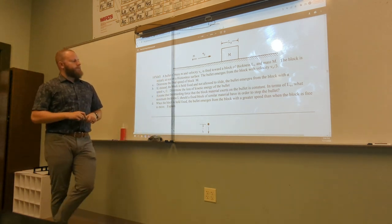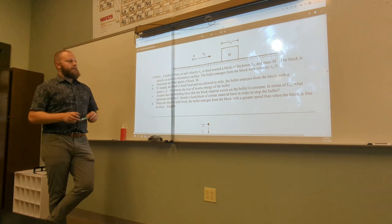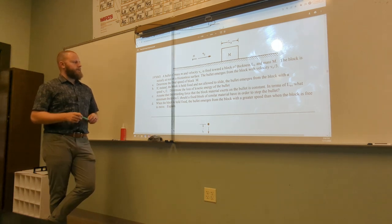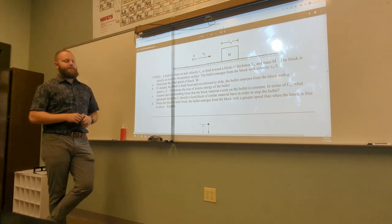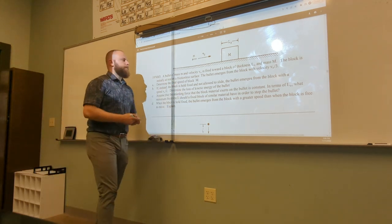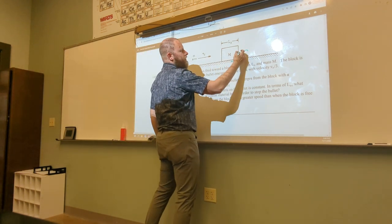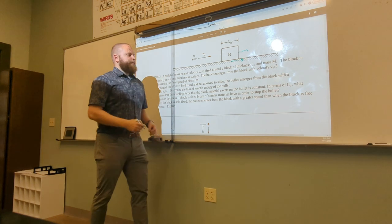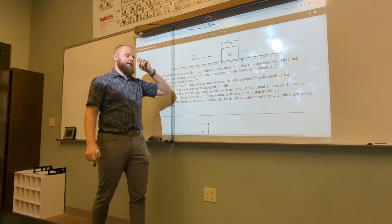A bullet of mass m and velocity V0 is fired towards a block of thickness L0 and mass M. The block is initially at rest on a frictionless surface. The bullet emerges from the block with a velocity of V0 divided by 3. Determine the final speed of the block. So this bullet is going to hit the block and cause the block to move, but the bullet's still going to come out. And so we want to find this final velocity of this mass here.